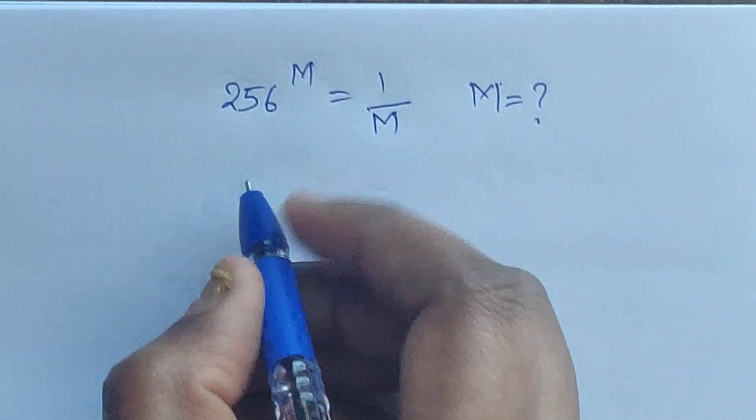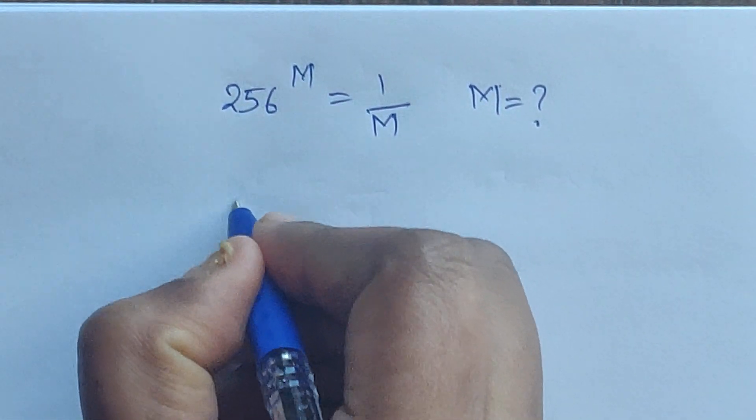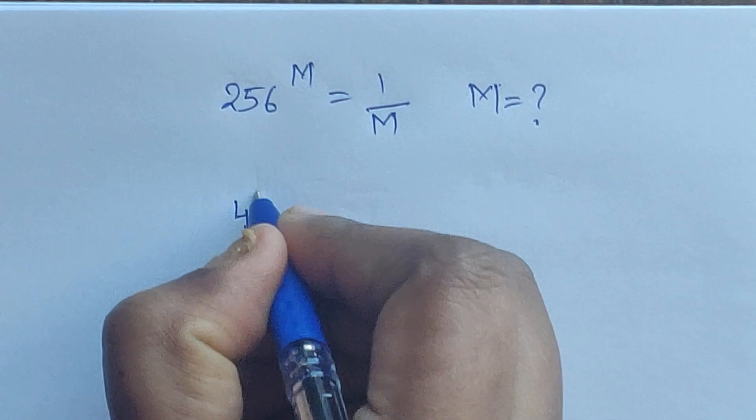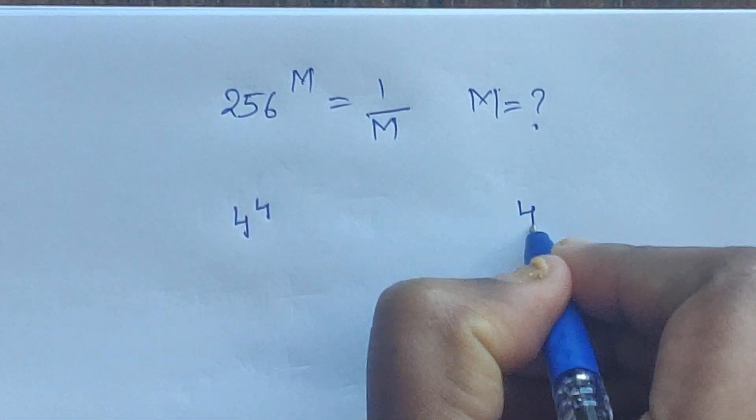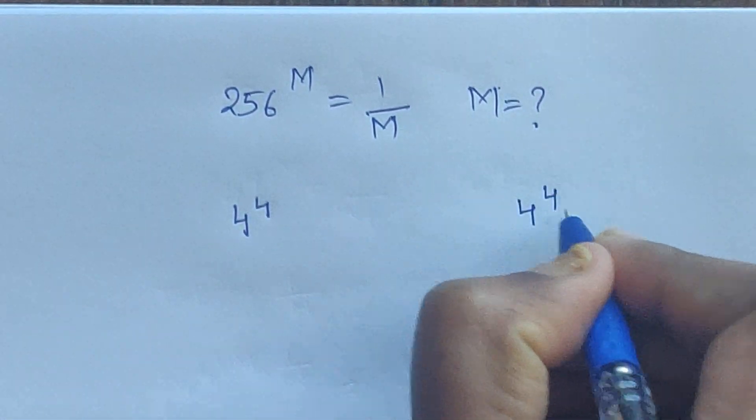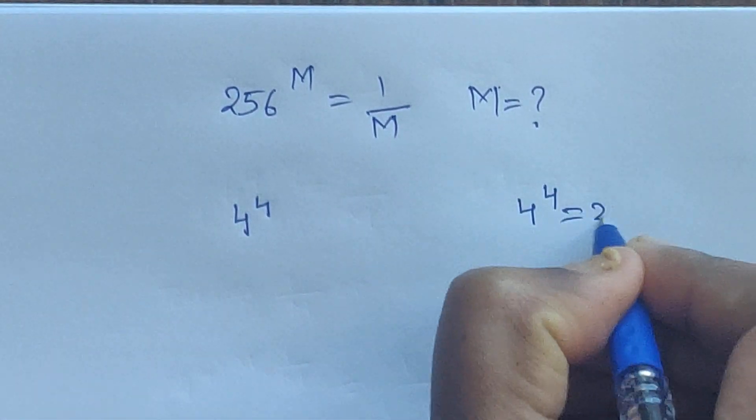So 256 — we can write it as 4 to the power of 4. So 4 to the power of 4 equals 256.